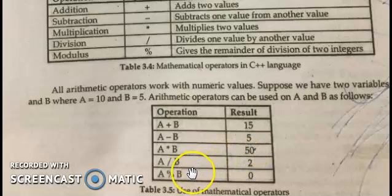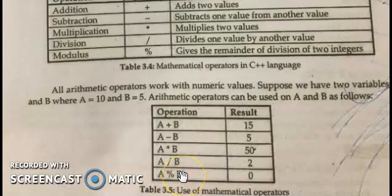If we talk about A modulus B, then it means 10 modulus 5. It means 5 divides into 10 with no remainder, so the remainder is 0. These are the arithmetic operators, which we can discuss more about by doing some examples.